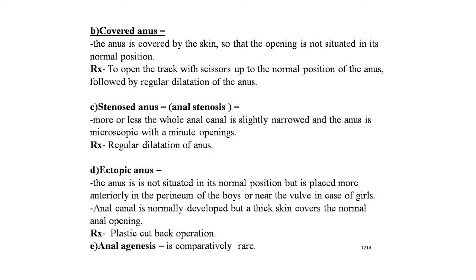The next anomaly is the ectopic anus. In this condition the anus is not situated in its normal position but is placed more anteriorly — in the perineum in boys and near the vulva in girls. The anal canal is normally developed but a thin cover overlies the normal anal opening. Treatment is the plastic cut-back operation. Anal agenesis is comparatively rare compared to the other conditions.